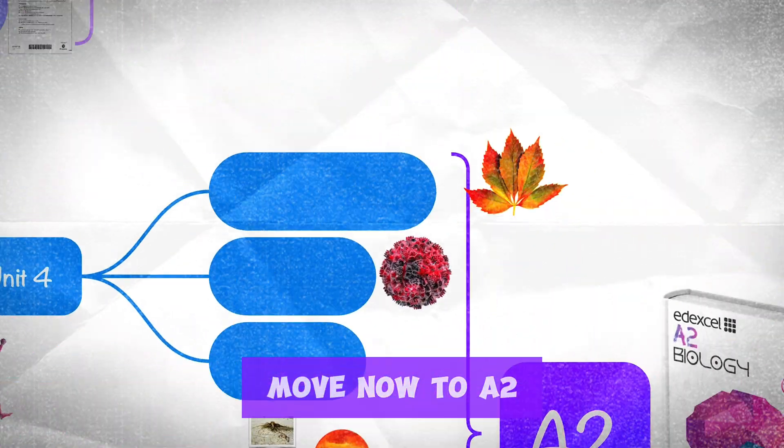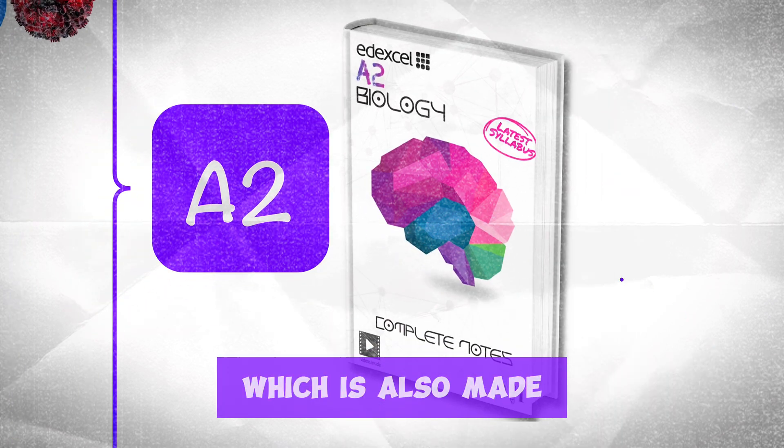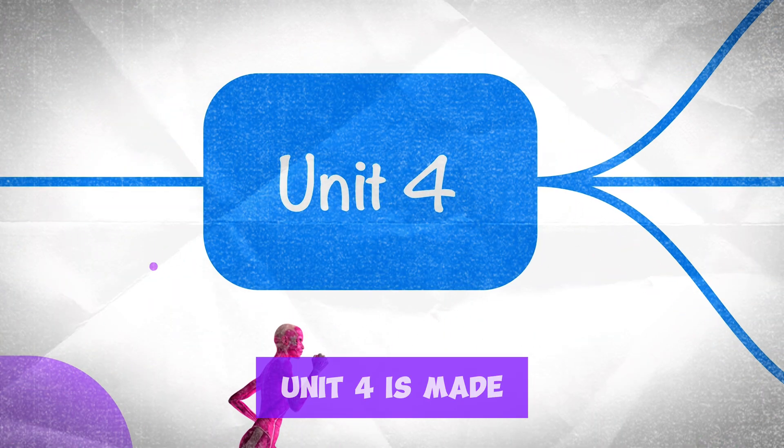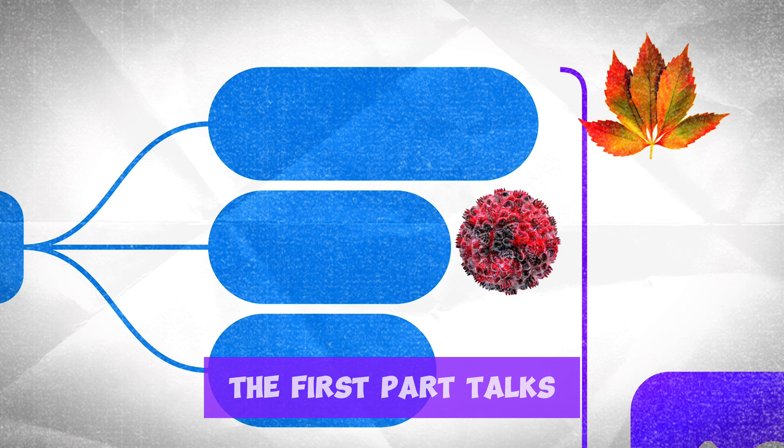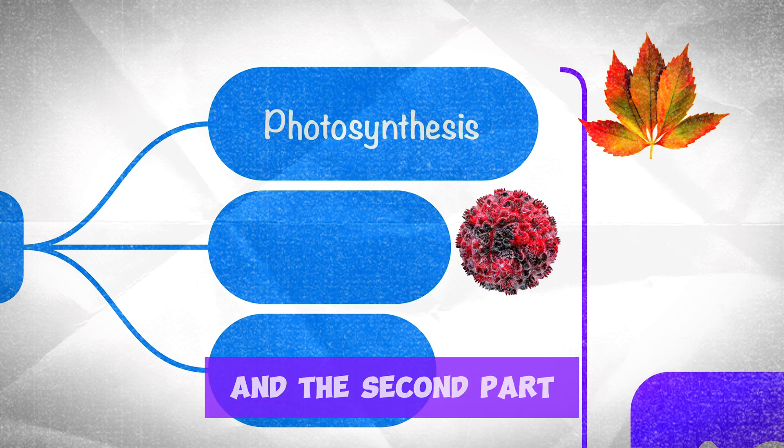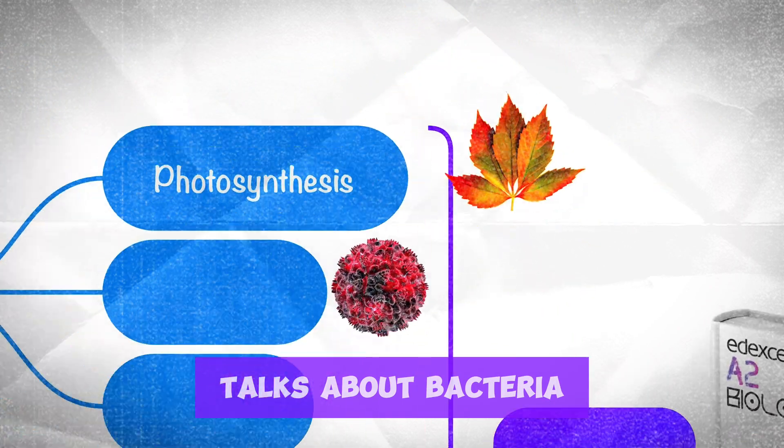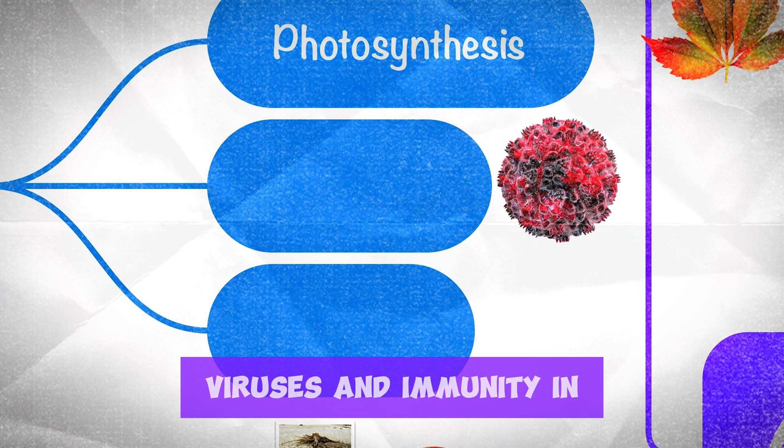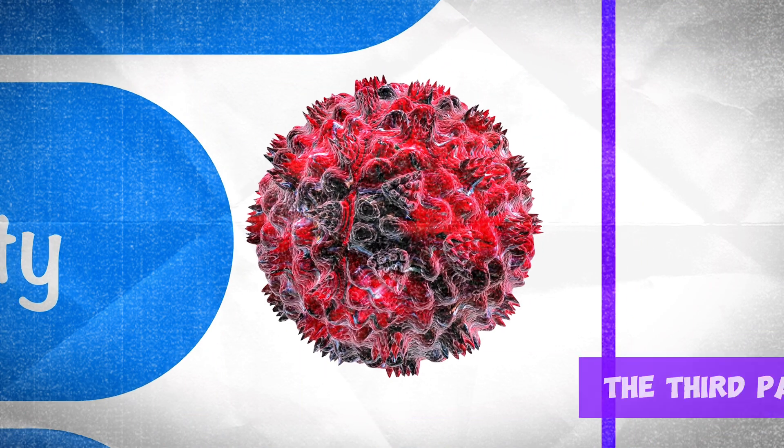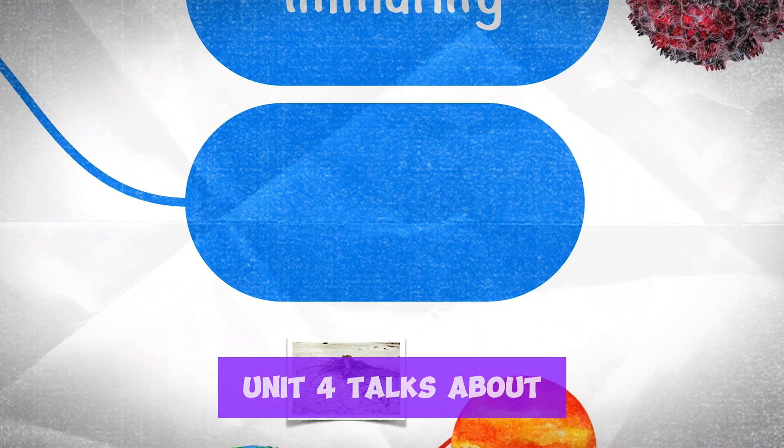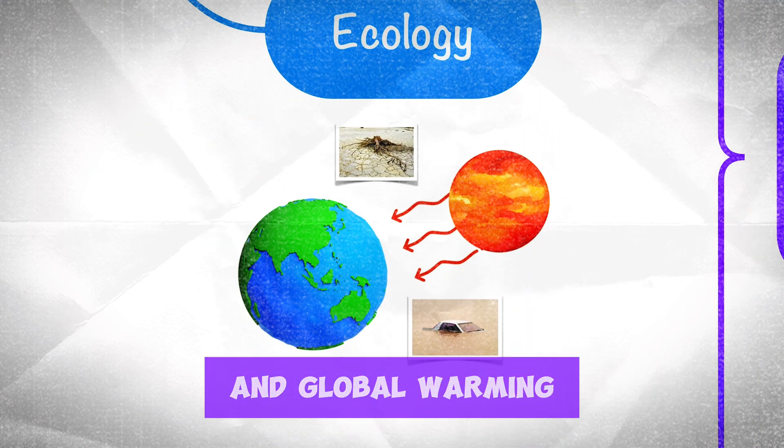Let's move now to A2 biology which is also made of three units. Unit 4 is made up of three main parts. The first part talks about photosynthesis and the second part talks about bacteria, viruses and immunity in general. The third part of unit 4 talks about ecology and global warming.